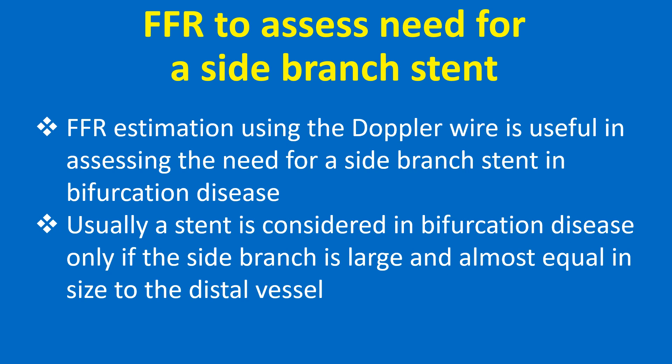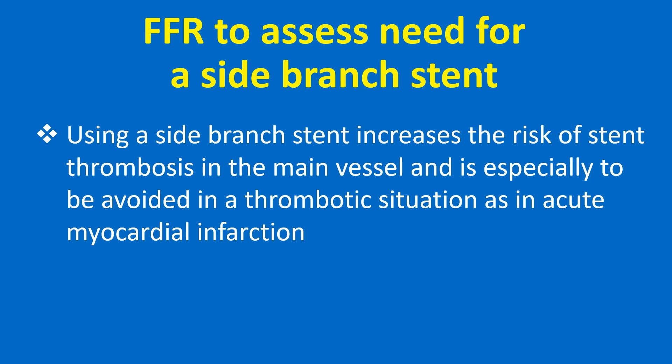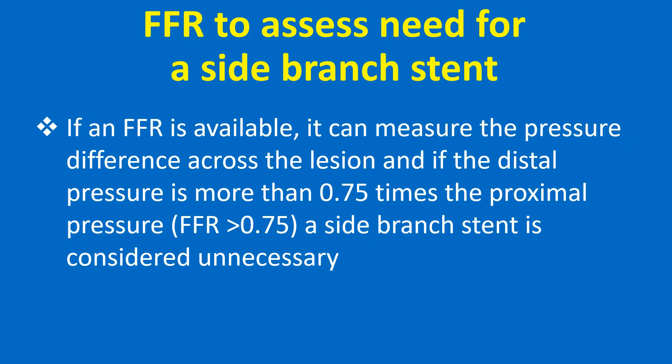FFR estimation using the Doppler wire is useful in assessing the need for a side branch stent in bifurcation disease. Usually, a stent is considered in bifurcation disease only if the side branch is large and almost equal in size to the distal vessel. Using a side branch stent increases the risk of stent thrombosis in the main vessel and is especially to be avoided in a thrombotic situation such as in acute myocardial infarction. If an FFR is available, it can measure the pressure difference across the lesion, and if the distal pressure is more than 0.7 times the proximal pressure, a side branch stent is considered unnecessary.